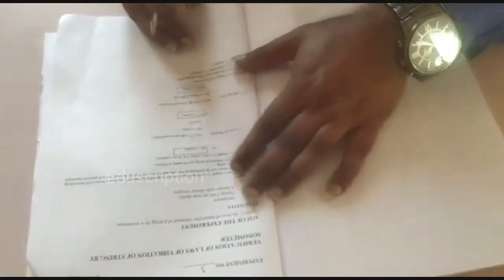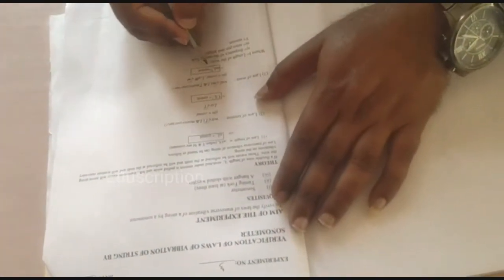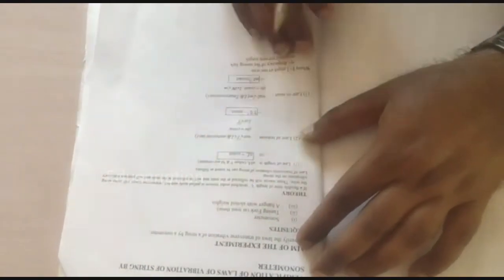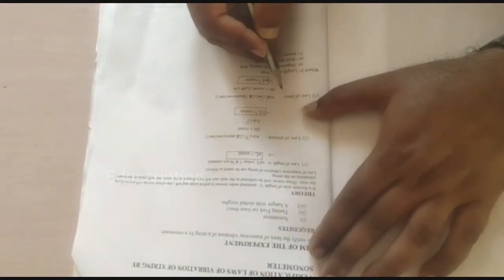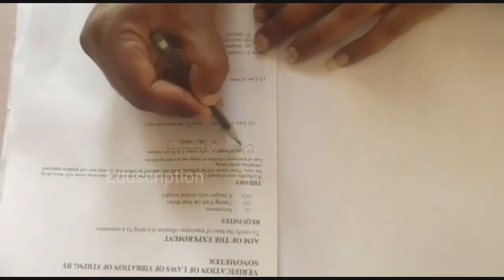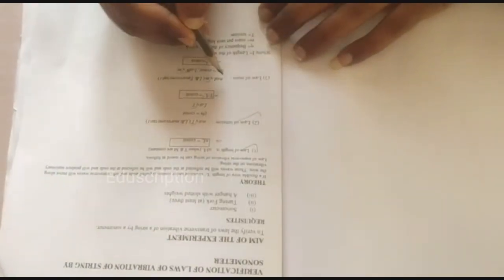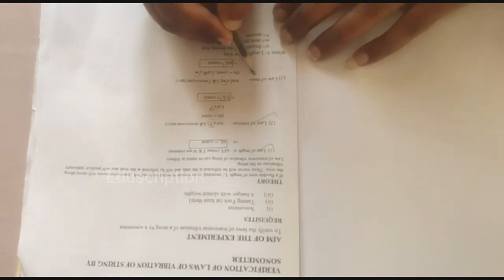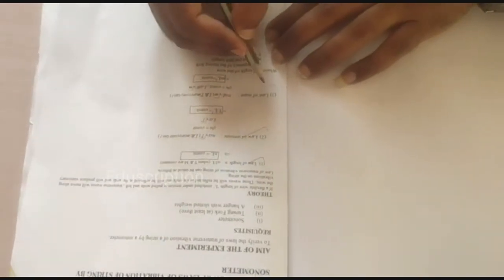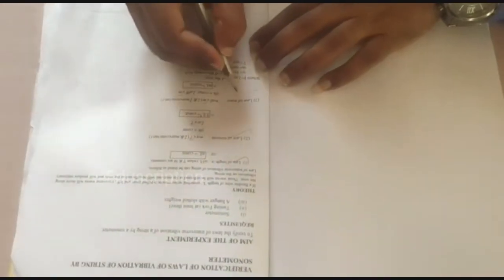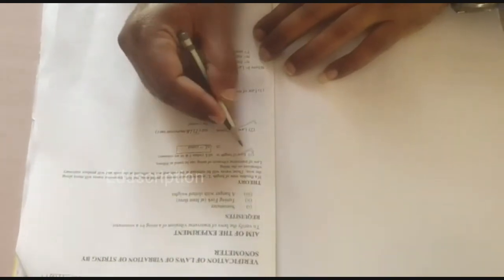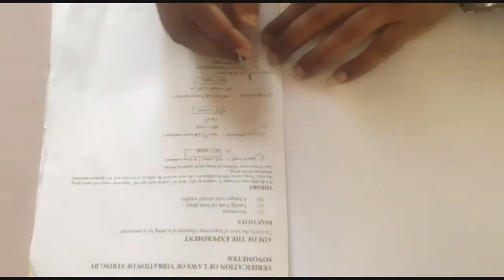And for law of mass, see here, mass is the mass per unit length of this string. So practically it is difficult to find law of mass. So here we will verify only two: law of length and law of tension. Because mass is the mass per unit length of this string, we have to find the unit length of this string and weigh it in the physical balance. That's why we will do here only two: law of length and law of tension, not law of mass.